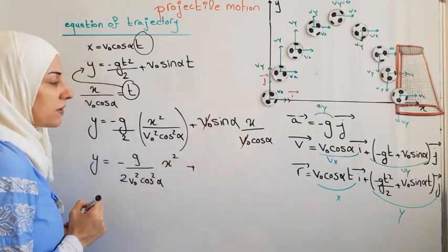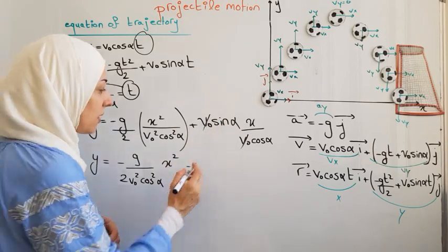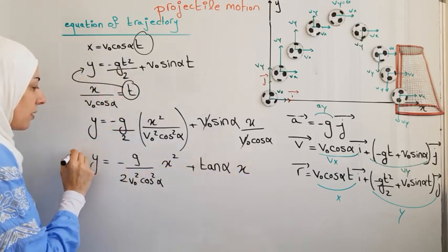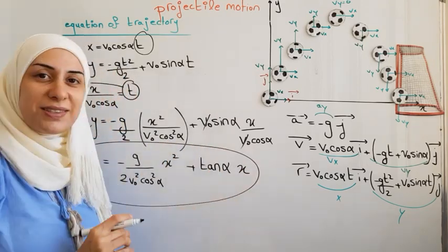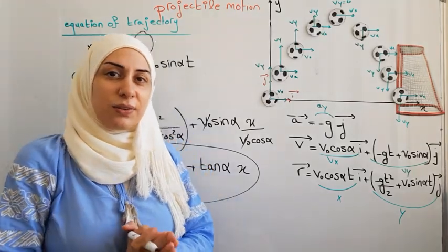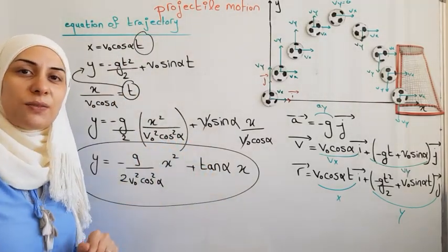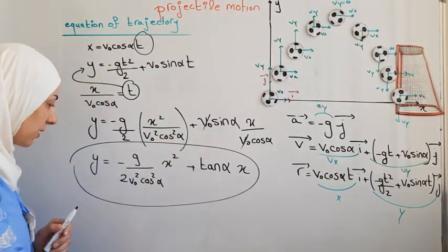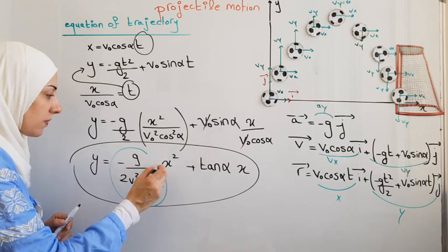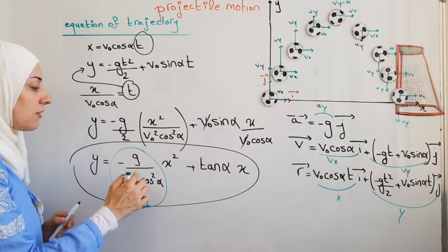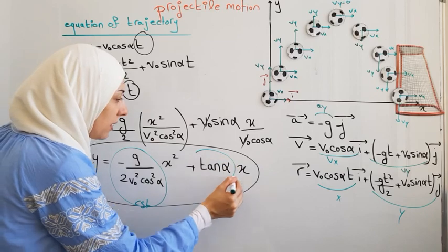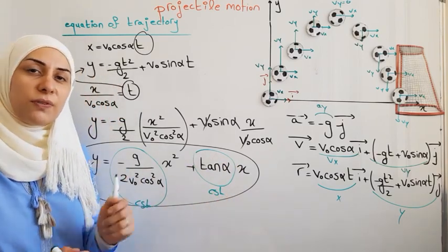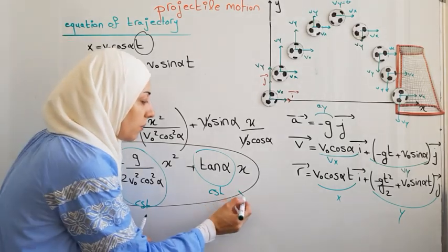After rearranging, we can cancel v₀, and sine alpha over cosine alpha becomes tangent alpha. This equation shows the relation between y and x — since g, v₀, alpha, and tangent alpha are all constants, we have y in terms of x squared. This is the equation of a parabola, which is the curve traced by the projectile during its motion.